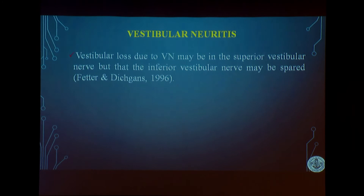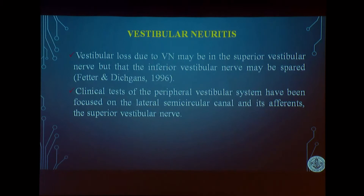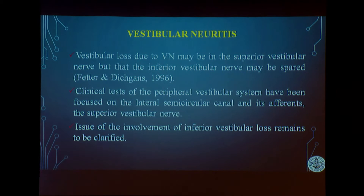In vestibular neuritis, there is vestibular loss due to infection in the vestibular nerve. Most cases involve the superior vestibular nerve, detected via caloric testing. However, there are cases where the inferior vestibular nerve is also involved, and for those cases no other test can detect inferior vestibular nerve neuritis — this is where cervical VEMP is useful.